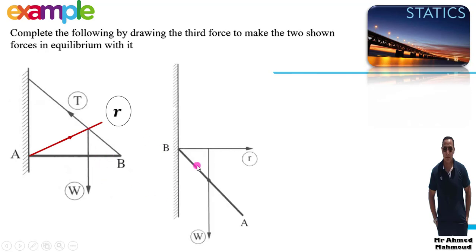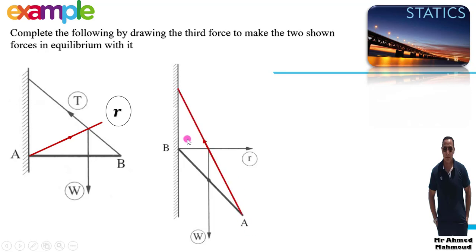The second example also has a rod. The weight acts downward, and the reaction of the wall acts on it. To keep equilibrium, we need a third force. A horizontal force would not make the lines meet at the required point, so the third force must be a tension force — the string must be directed so all three forces meet at the same point.